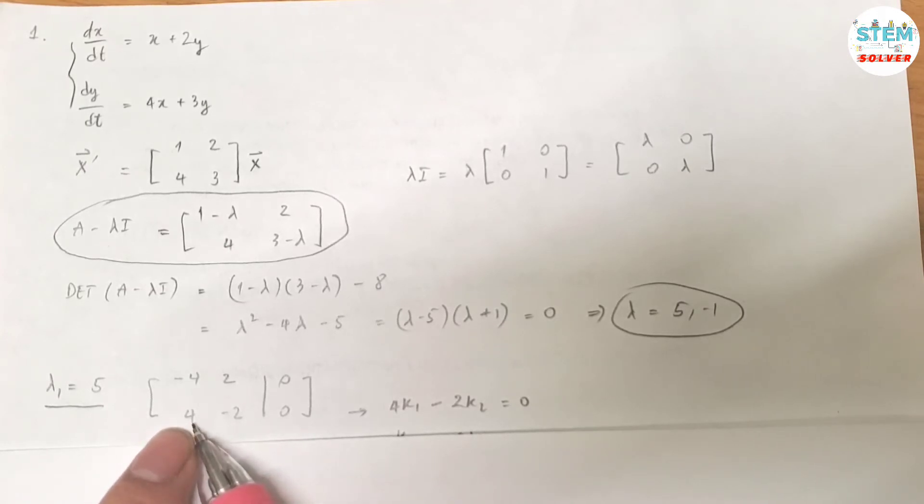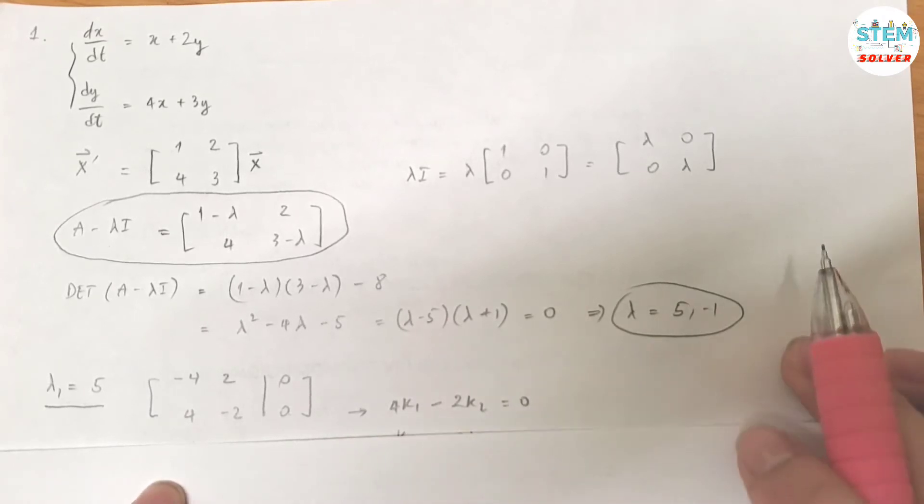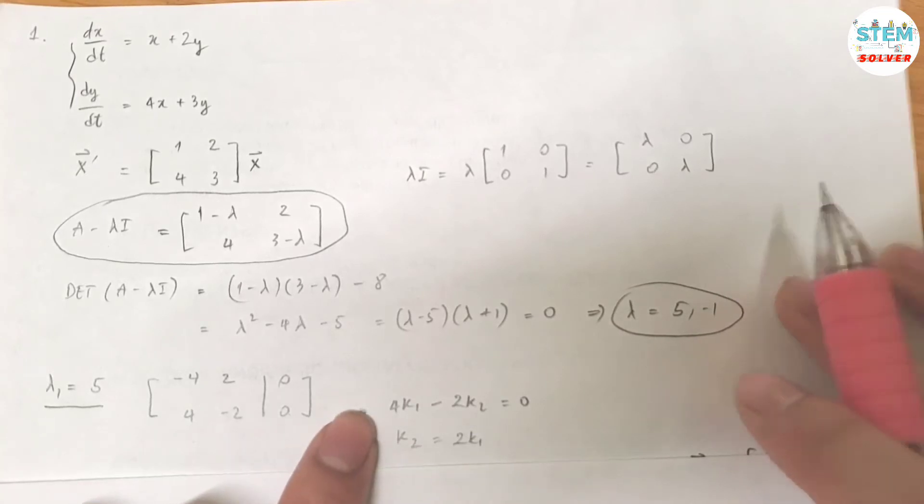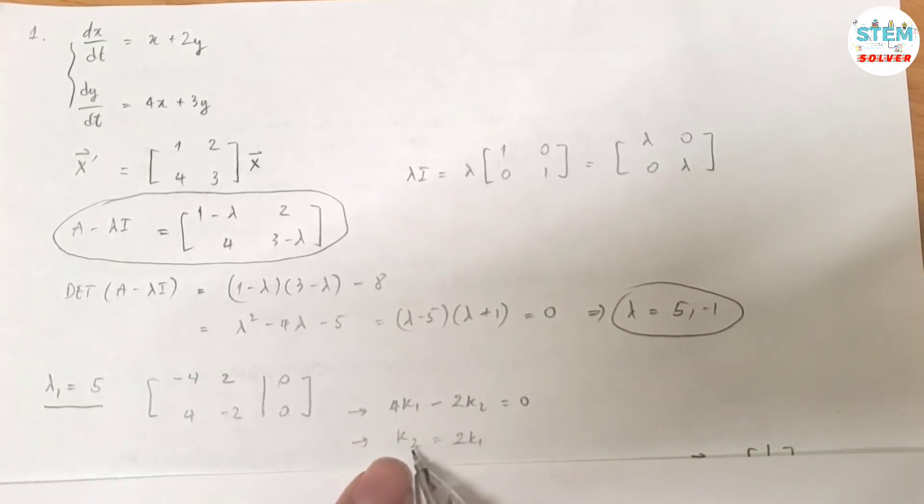So for this one, I have... let's see. I'm going to pick the second row. So 4k1 minus 2k2 equals 0. So this is basically the same as you write for an equation. Alright, now you solve for this one. So I'm going to solve for k2. That gives me 2k1.